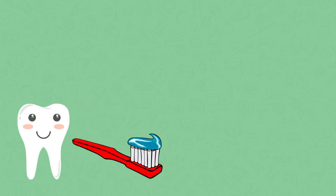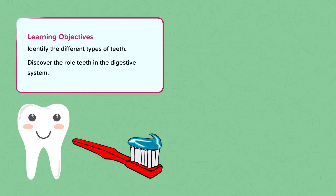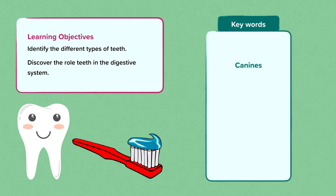This nugget is about teeth. In this nugget we're going to have a look at the different types of teeth there are and discover what role they play in the digestive system. The key words we'll use include canines, molars, incisors, carnivore, herbivore, decay, digestion and bacteria.